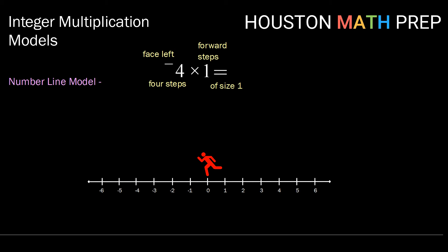Now that we're oriented correctly, let's take those 4 forward steps of size 1: 1, 2, 3, 4. Noting where we end up, in this case at negative 4, we get that negative 4 times 1 is negative 4.